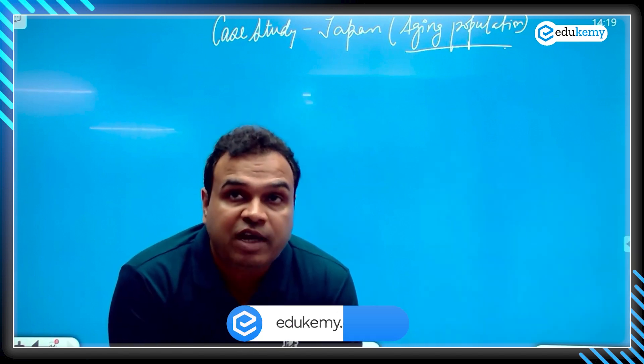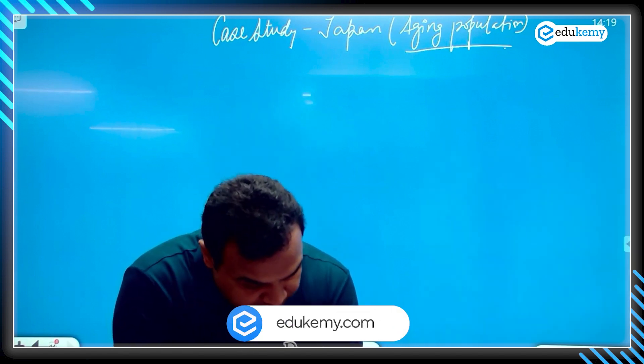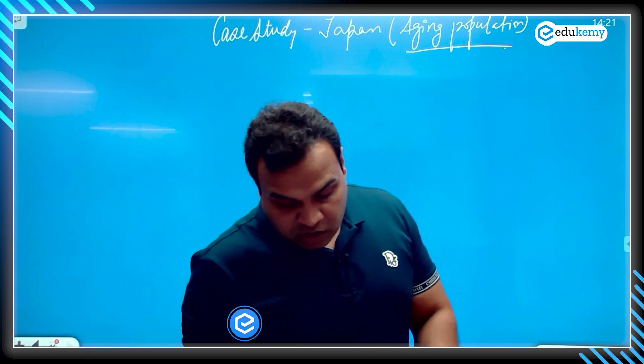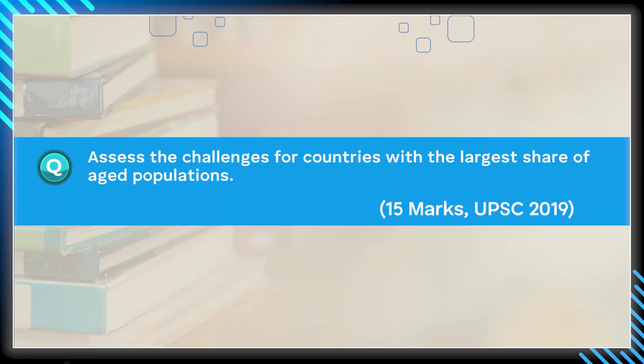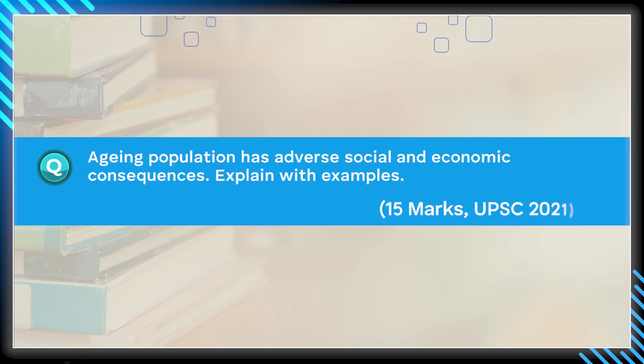There are a couple of questions which have been asked in previous UPSC papers. Question one: assess the challenges for countries with the largest share of aged population, 2019, 15 marks. Next question: aging population has adverse socio-economic consequences, explain, 15 marks, 2021.